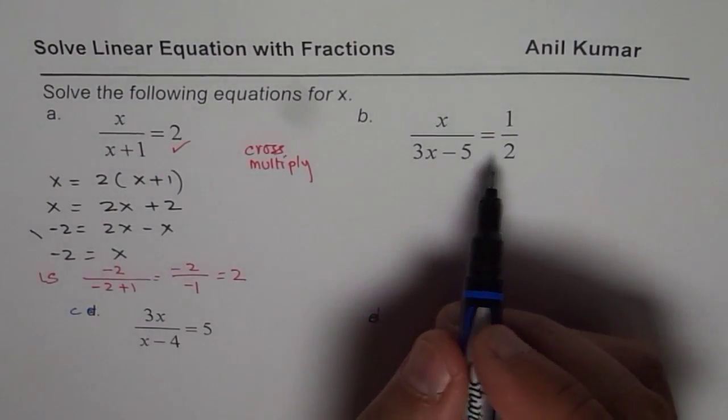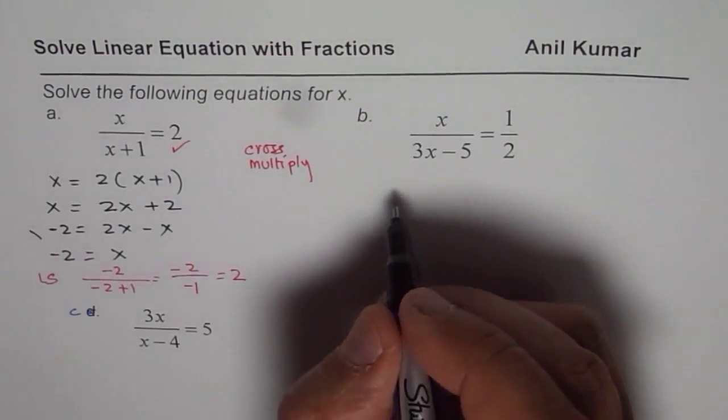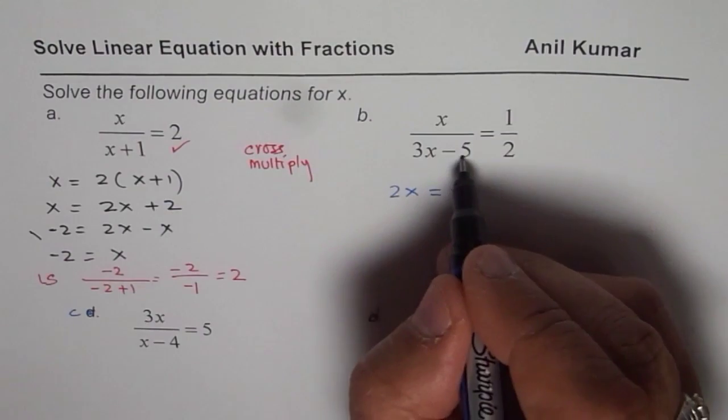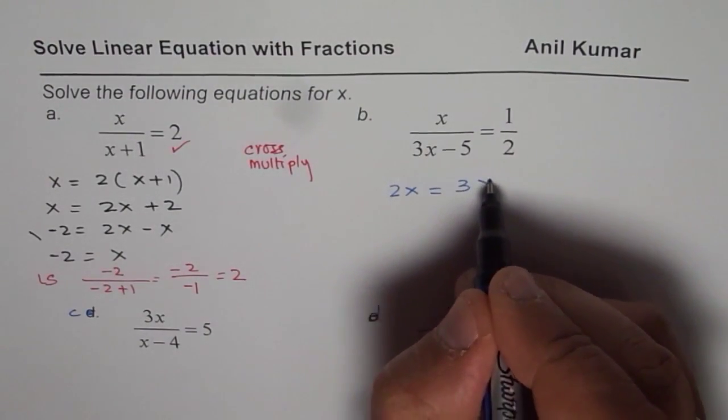Let's do once again, the second question now. 2 times x is what you get on the left side. 1 times (3x - 5) is on the right side: 3x - 5.